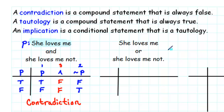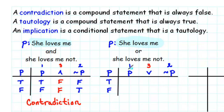On the other hand, let's consider 'she loves me or she loves me not.' Again, we'll let P represent 'she loves me.' The only difference here is that instead of having P and not P, we have P or not P. We'll fill in columns one and two just the same as before, but this time we'll use disjunction rather than conjunction. Remember that disjunction is false only when both parts are false — it's true if at least one part is true.